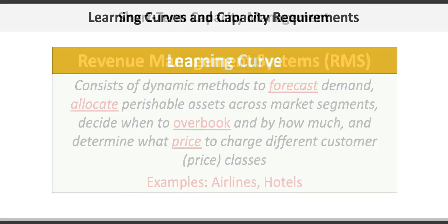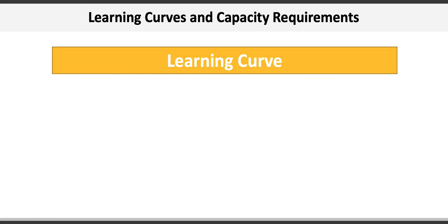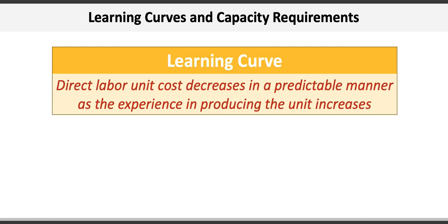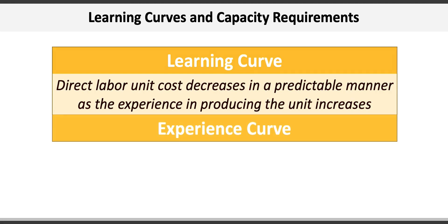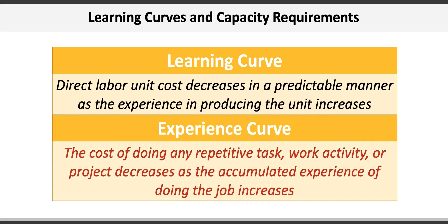The last major concept in Chapter 10 is learning curves. A learning curve illustrates how labor cost decreases in a predictable manner as the experience in producing the unit increases. It's based on the simple premise that as humans become more proficient at a task, it takes less time to complete the more they do it. This effect can also be described as an experience curve, where the cost of doing any repetitive task, work activity, or project decreases as the accumulated experience of doing the job increases.